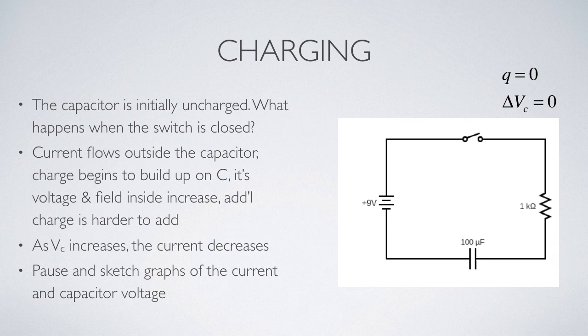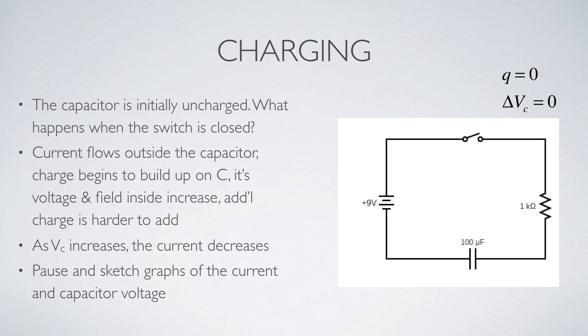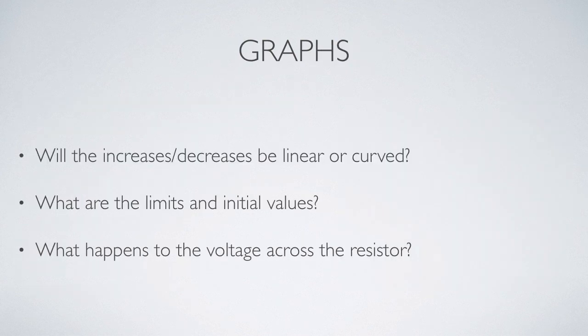We'll start with the switch open and the capacitor initially uncharged, so Q is zero and delta V across the capacitor is also zero. When the switch is closed, current will flow and charge will build up in the capacitor. As the electric field inside the capacitor and the potential difference across it both increase, it becomes increasingly more difficult for additional charge to be added. This means that as the charge increases, the current should decrease.